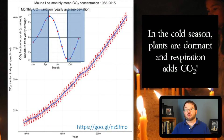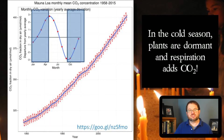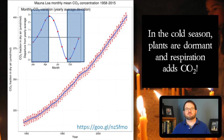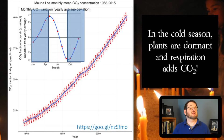In the cold season, when plants are dormant but respiration is still going on — animals and bacteria are still consuming food and using oxygen to get energy — we release carbon dioxide back into the atmosphere faster than it is being consumed by plants, and carbon dioxide levels rise.